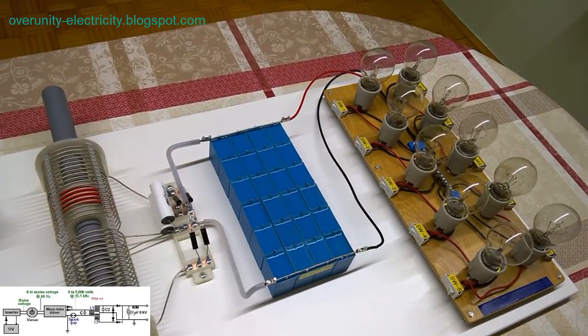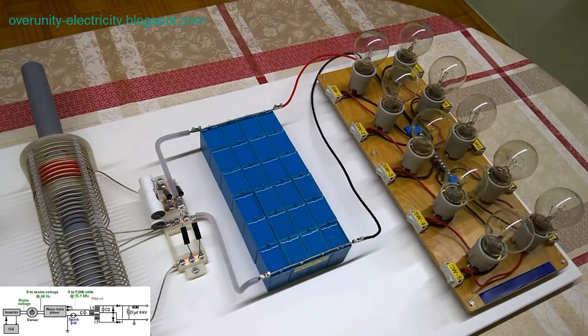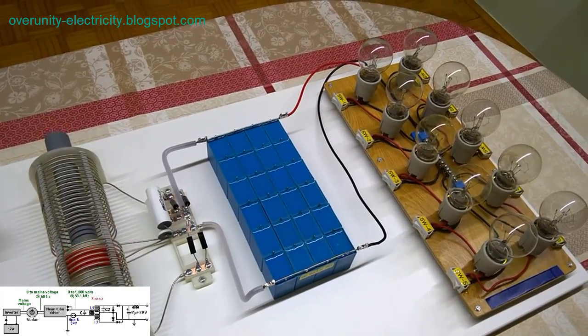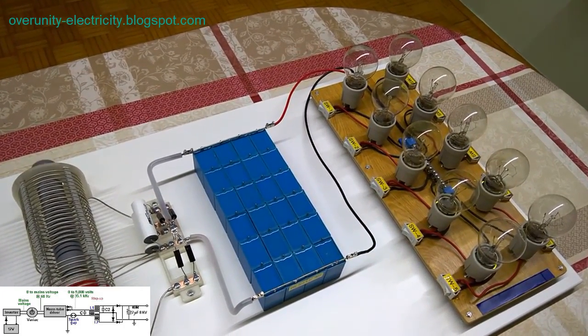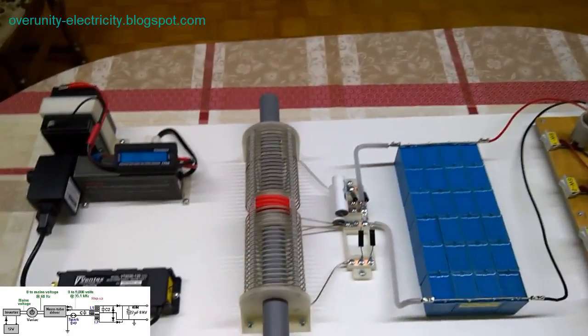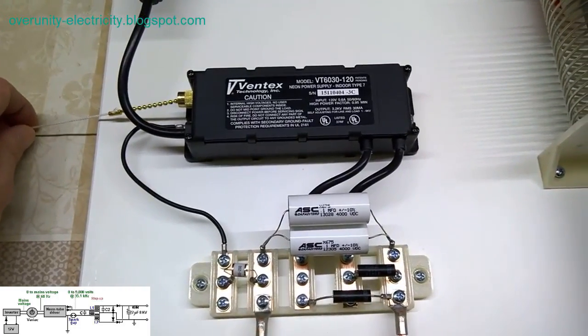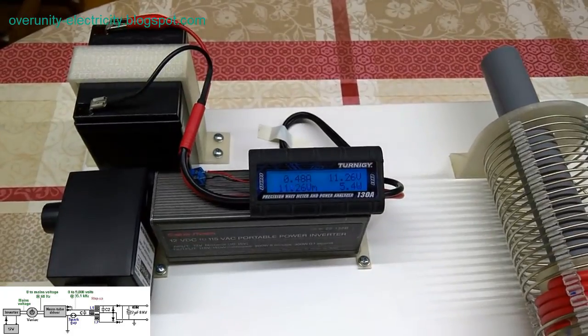Managing Voltage with a Spark Gap. Safety is paramount when dealing with high voltages. Smith's solution to this issue is a spark gap positioned between the coils. This spark gap serves as a safety mechanism, connecting to earth ground. It effectively limits the voltage to a controlled level for safe use in various applications. This element ensures that the generated high voltage does not pose a danger to users or equipment.